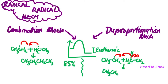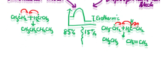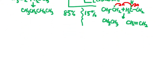This results in the formation of two products: one is ethane, and on the other side we have the formation of a pi bond, which gives ethene. This disproportionation pathway accounts for just 15 percent of the reaction.